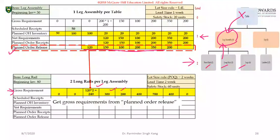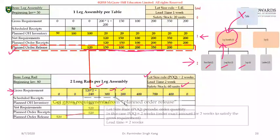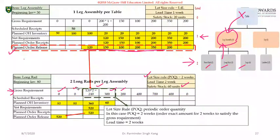The beginning inventory is 80 and in this case we're using the POQ — Periodic Order Quantity — rule, ordering every two weeks. Week to week the quantity may vary, but the ordering period is fixed. We should keep at least 60 units of safety stock. For weeks one and two there's no gross requirement. Week one planned on-hand is 80 from the beginning inventory, gross requirement is zero, no scheduled receipt, no planned order release — so 80 units. Similarly in week two, no gross requirement, still 80 units.